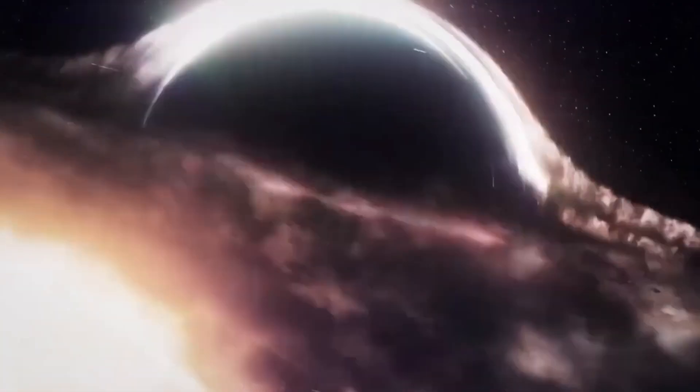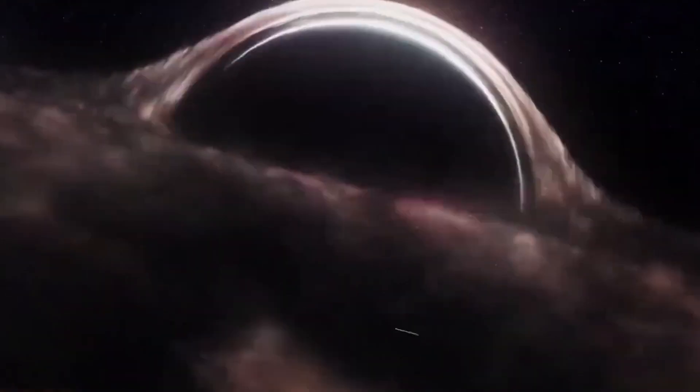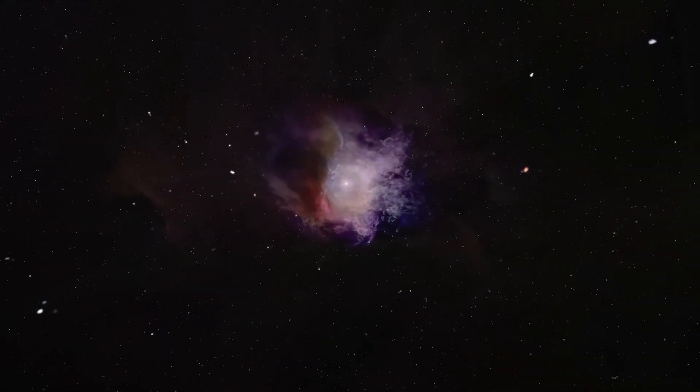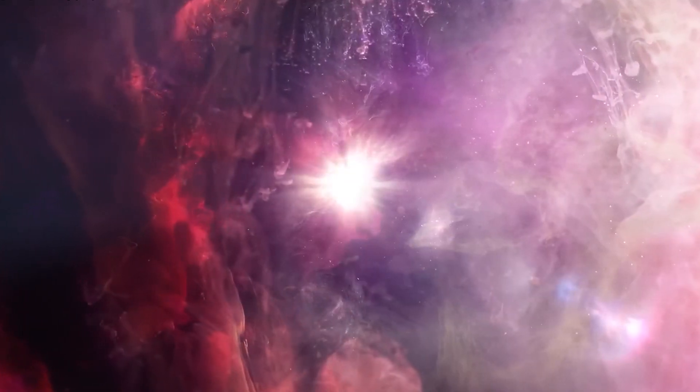Black holes are incredibly massive objects that form when massive stars collapse at the end of their lives. When a star runs out of fuel, it can no longer fight against the pull of gravity. If the star is big enough, its core collapses under its own gravity, creating a black hole.